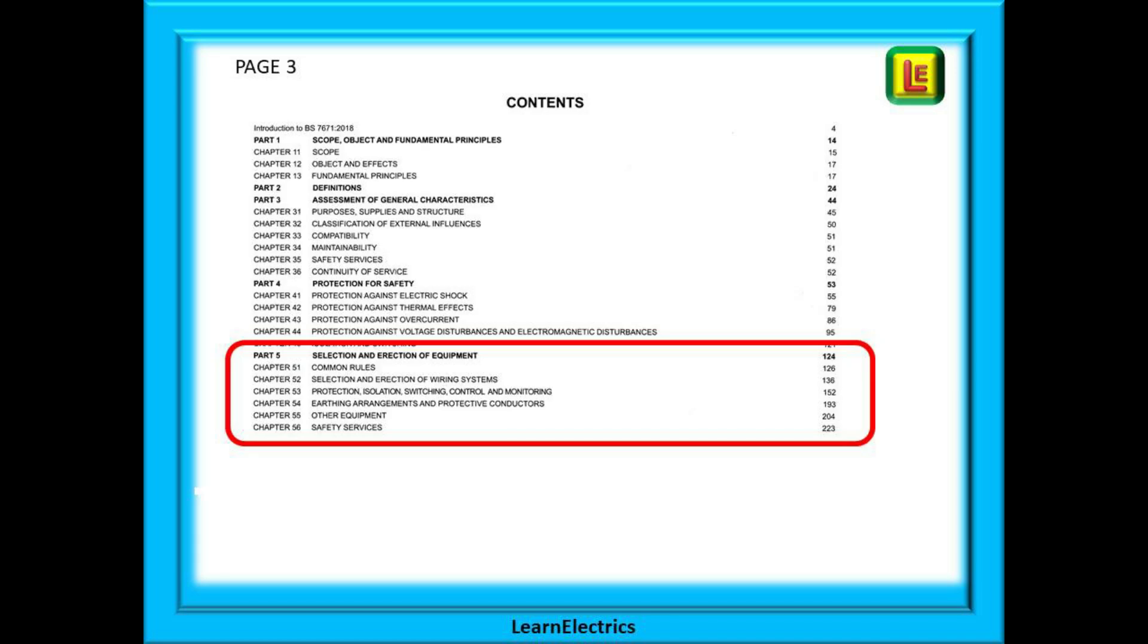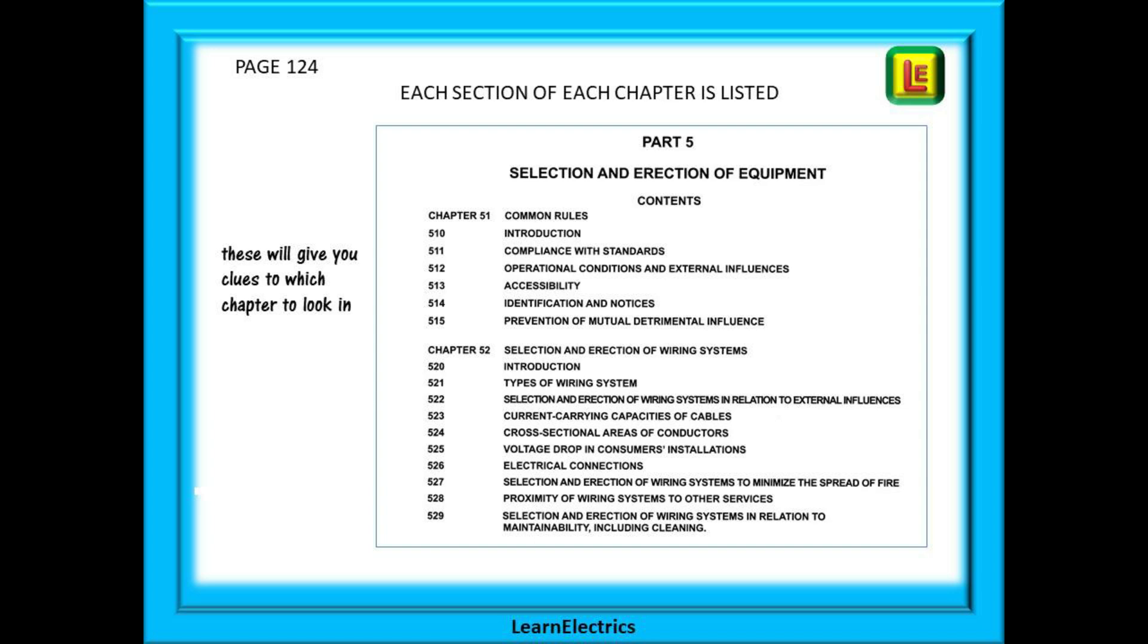Here is page 3, the main contents page and Part 5 is shown in the red box. Part 5, as we said, has its own contents page so turn to page 124 in the book. You can see here that every chapter is listed with the main sections shown. This page will give you clues to which chapter to look in.